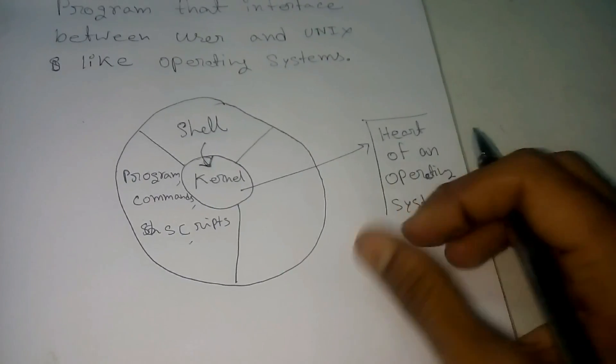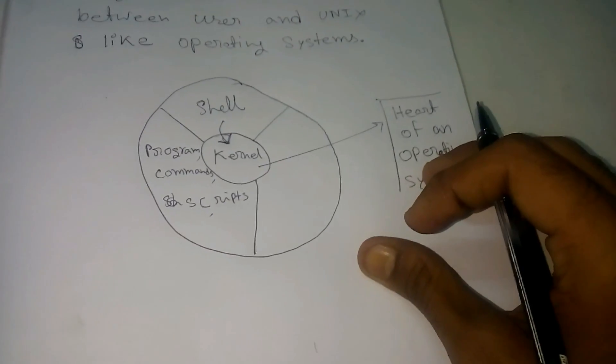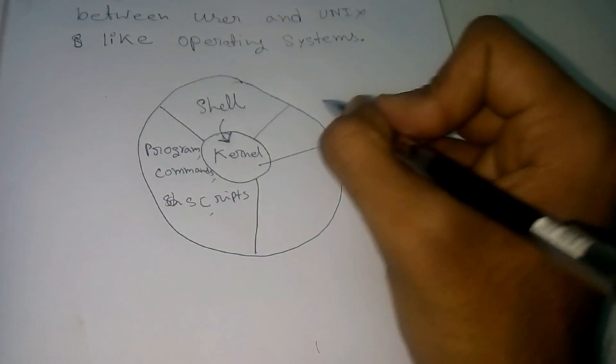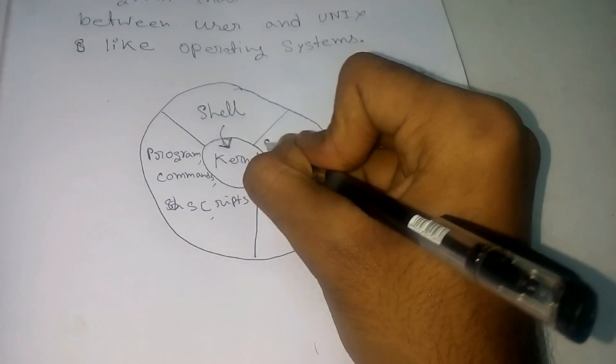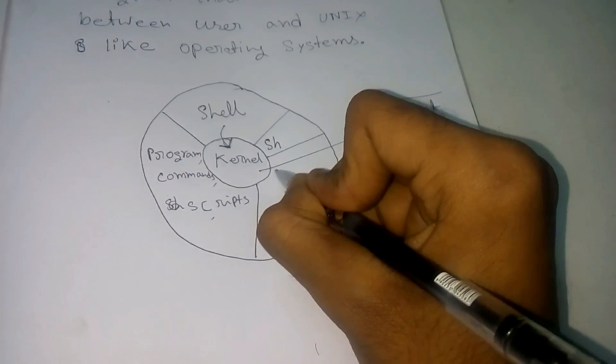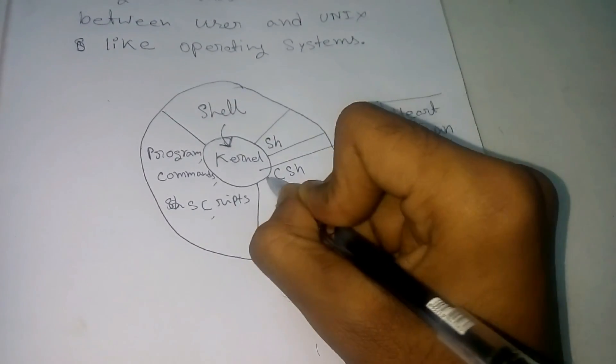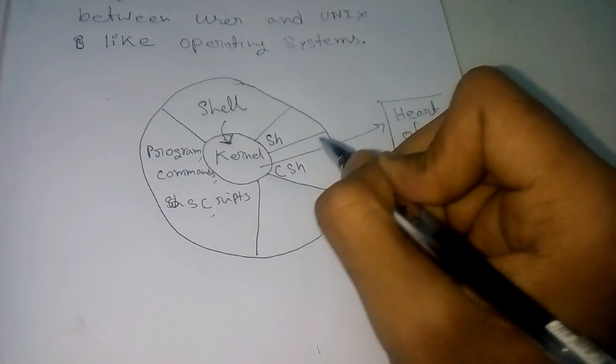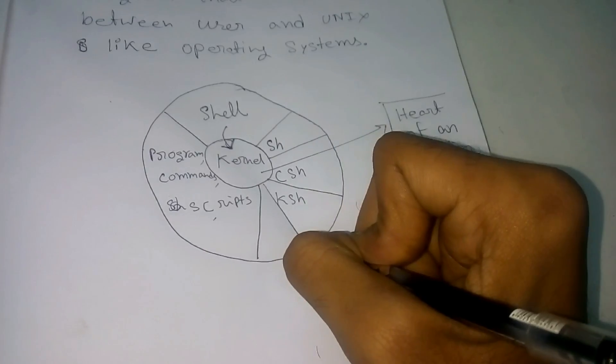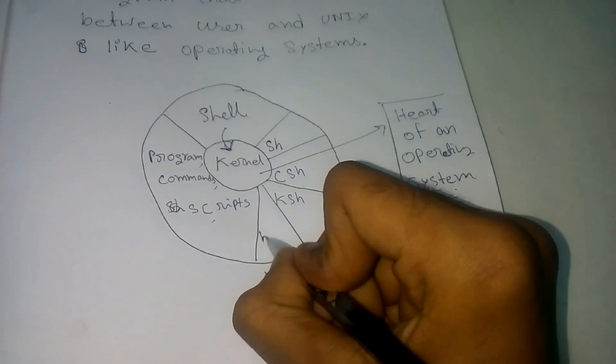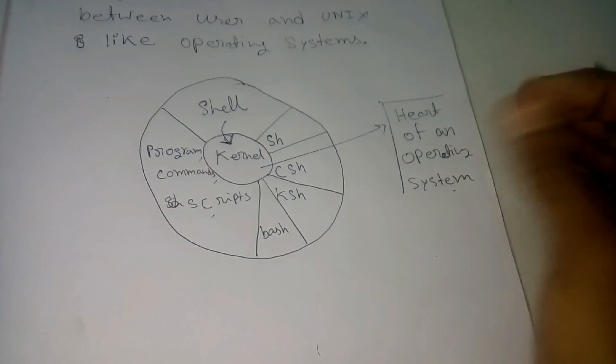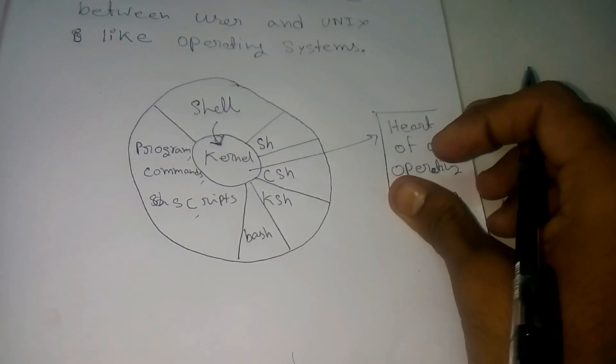There are some popular shells that we can use. They are SH shell, CSH shell, KSH or CORN shell, and BASH shell. These are some common shells that we can use.